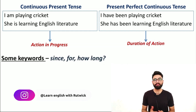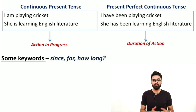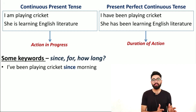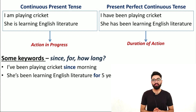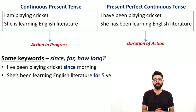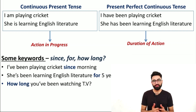To talk about duration, we use words like since, for, and how long. Since is used when we know the specific point in time the activity started — a year, a month, or a part of the day. For is used to talk about the overall duration. For example: 'I have been playing cricket since morning.' Or: 'She has been learning English literature for five years.' You can also ask questions using how long: 'How long have you been watching TV?' — 'I have been watching TV for two hours.'